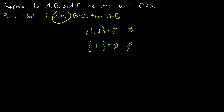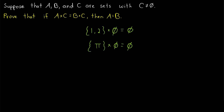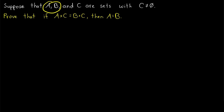Recall the Cartesian product A cross C is the set of all ordered pairs (a, c), where a is an element of the set A and c is an element of the set C. So when we cross a set with the empty set, we don't have any elements in the empty set in order to create any of these ordered pairs. That's why C cannot be the empty set, but notice we're not saying that A and B have to be non-empty.